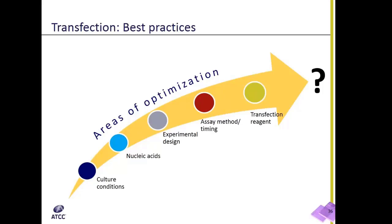There are many aspects to optimize when establishing a transfection protocol, and I'll discuss each of these in detail. These areas include culture conditions, choice of nucleic acid, experimental setup, analysis method, and the choice of transfection reagents.